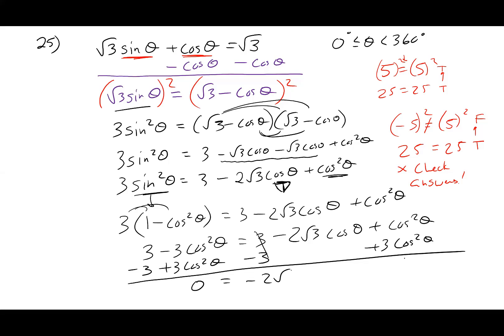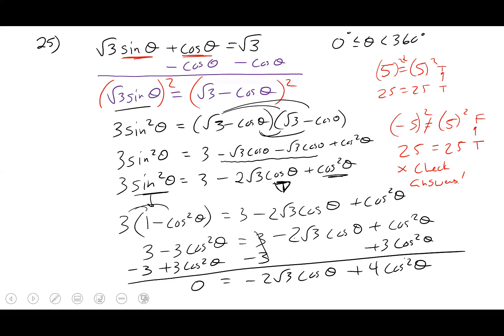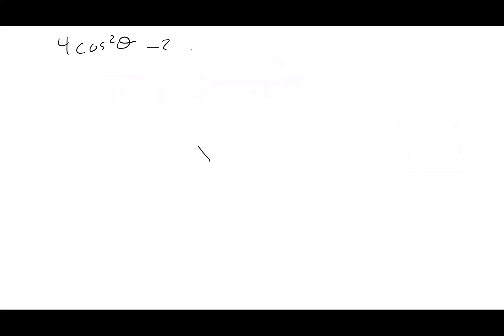So negative two root three cosine theta plus four cosine squared theta. I don't like the look of that — I know I moved everything over to the right-hand side, so I'm just going to flip-flop the equal sign. Four cosine squared theta minus two root three cosine theta equals zero. I'm going to factor out a two — because four and two share a two — and also factor out a cosine theta, leaving me with two cosine theta minus root three.